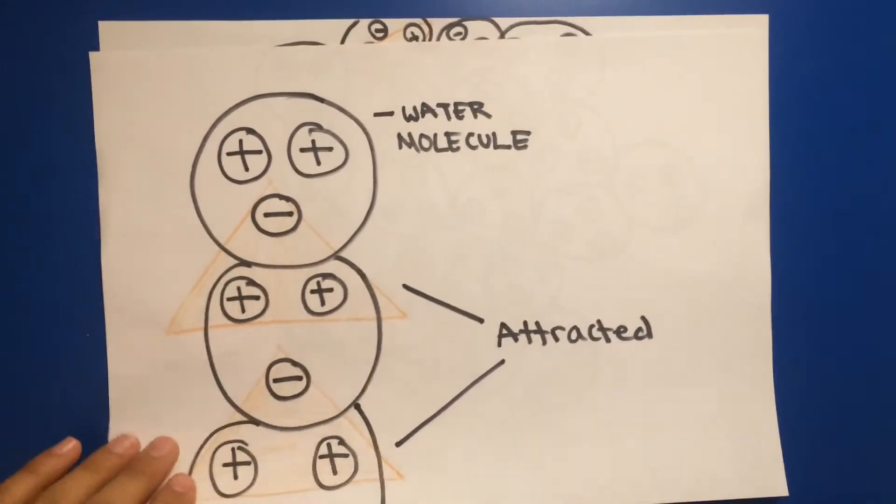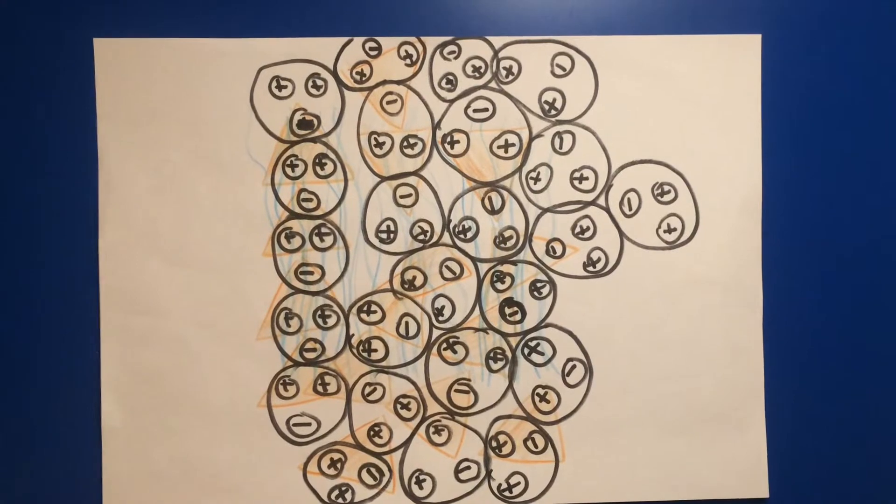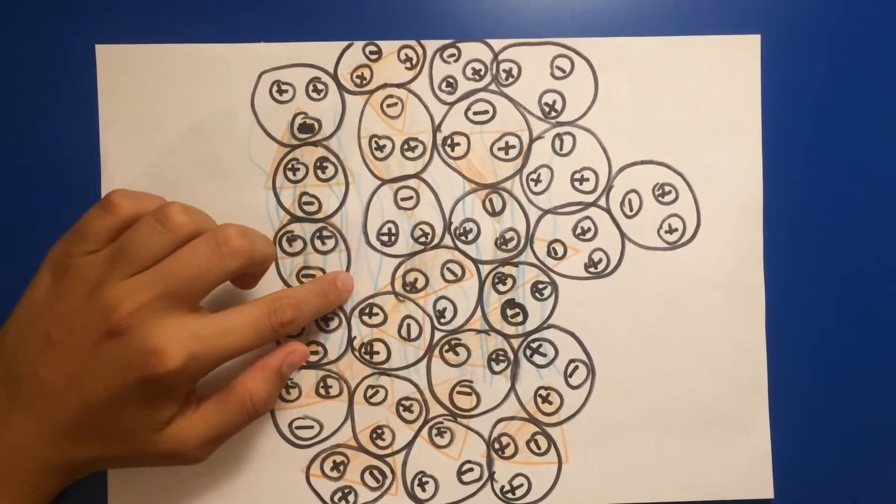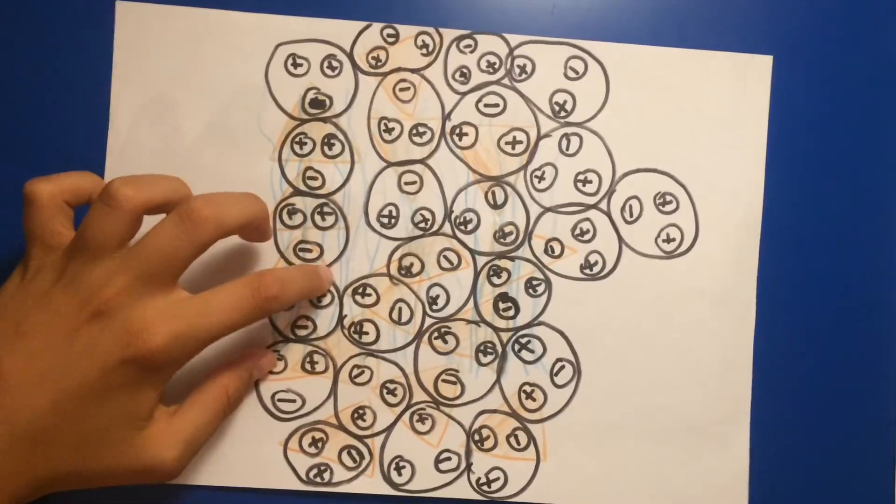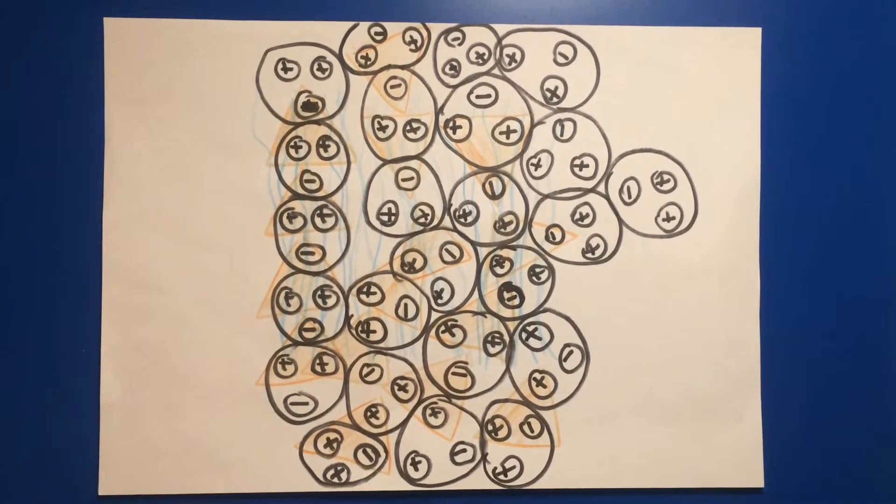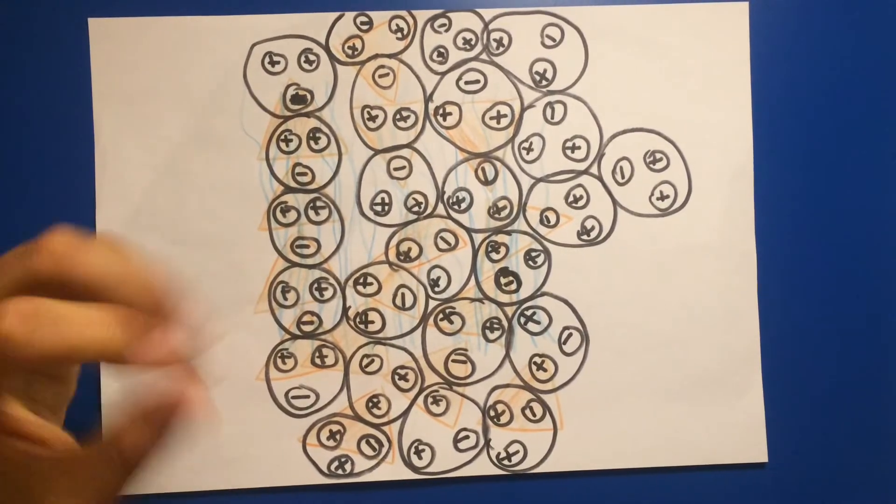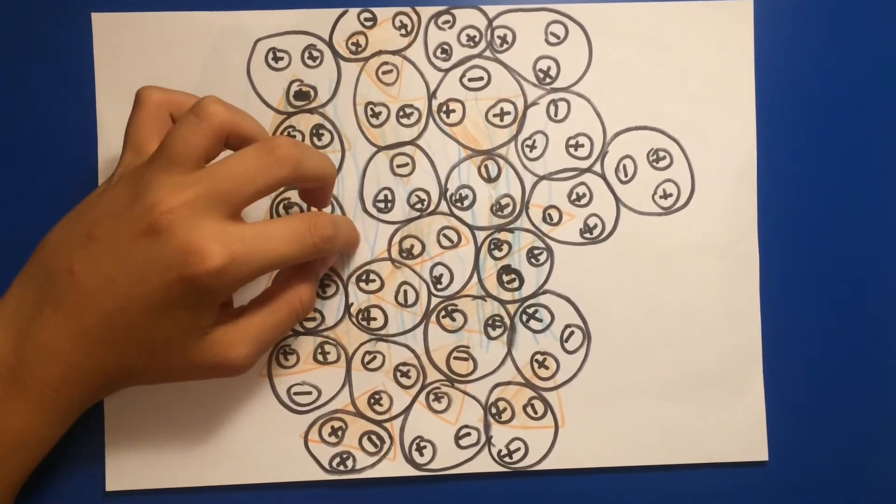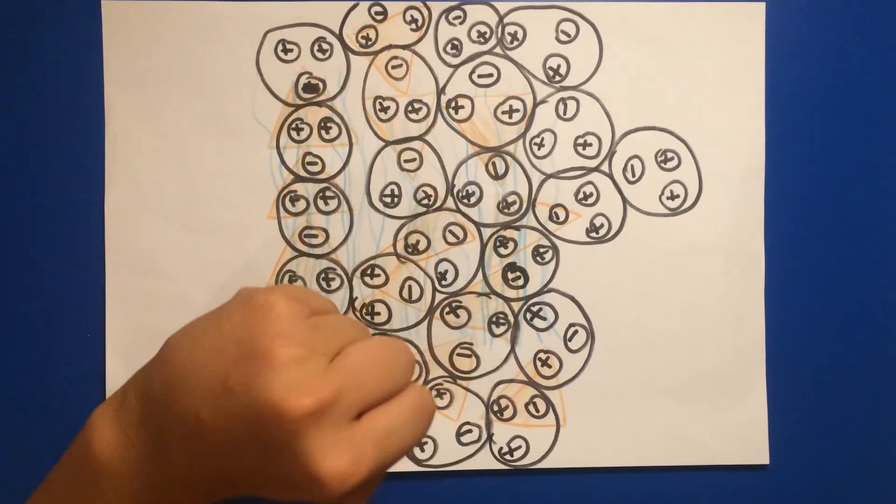Now this is a diagram representing hair and water molecules. The blue lines represent hair, and these are all water molecules. The orange is where the negative and positive meet up. So when all these water molecules are coming together and binding each other, our hair gets stuck in the middle of it all, therefore clumping together.